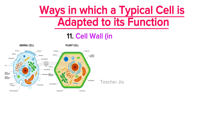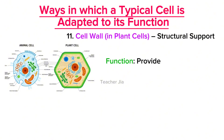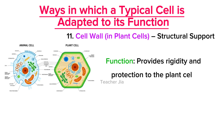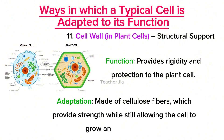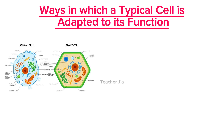Next is the cell wall in plants, which is involved in structural support. Its function is to provide rigidity and protection in plant cells. Its adaptation is that cell walls are made up of cellulose fibers, which provide strength while still allowing the cell to grow and change shape.